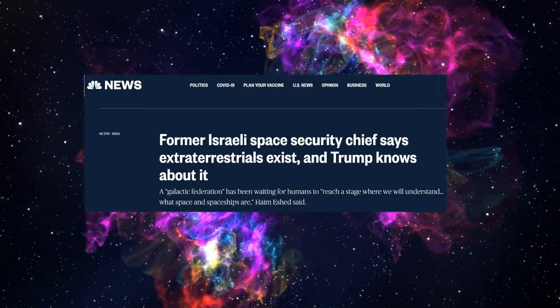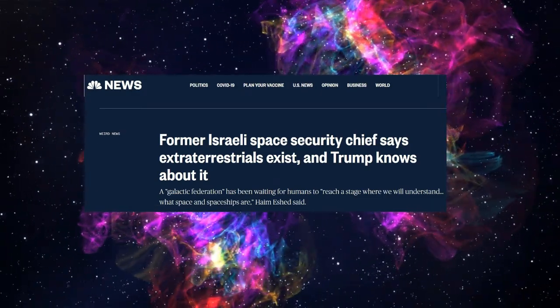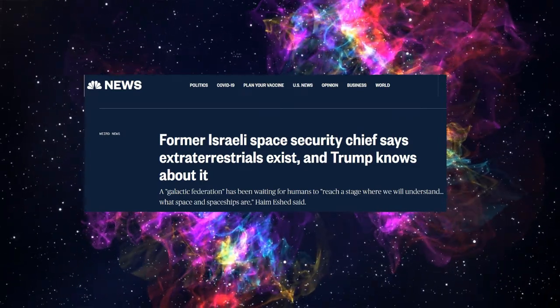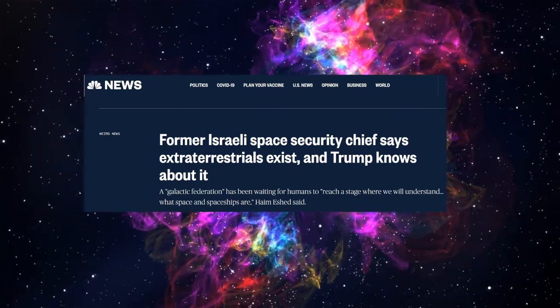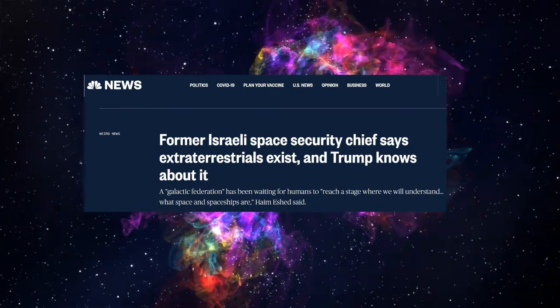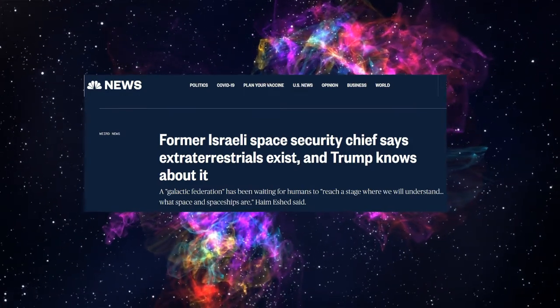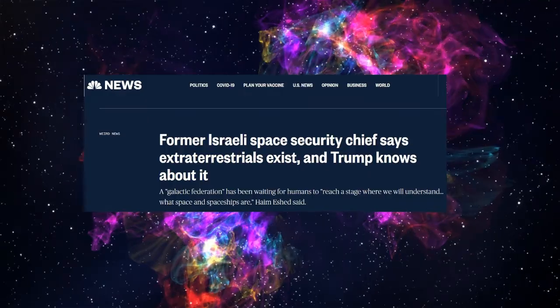Amongst his many revelations was that humans have been working with aliens on a special base on Mars, and that Donald Trump was about to reveal their existence, but alien intervention prevented him from doing so. Humanity, according to Eshed, apparently is not ready yet.